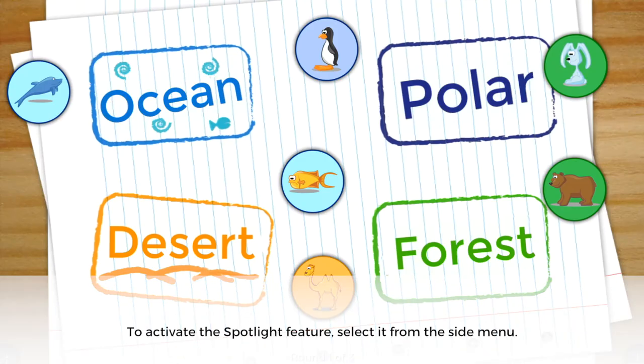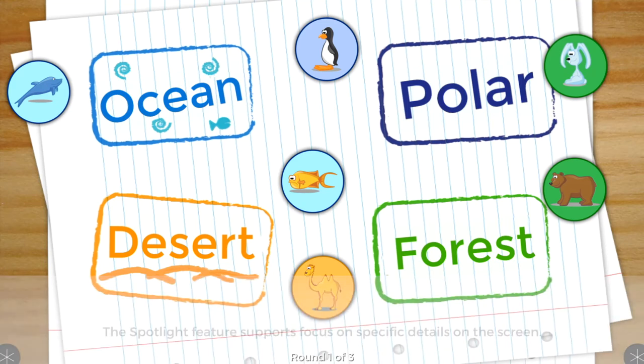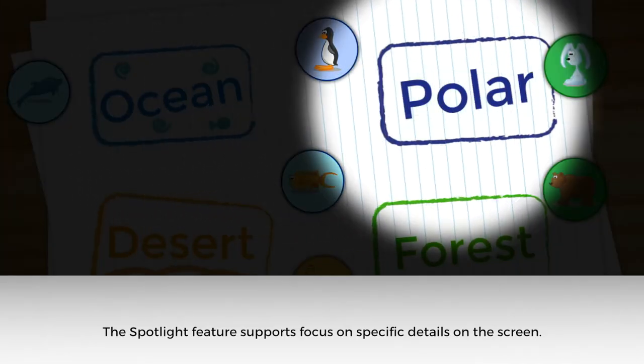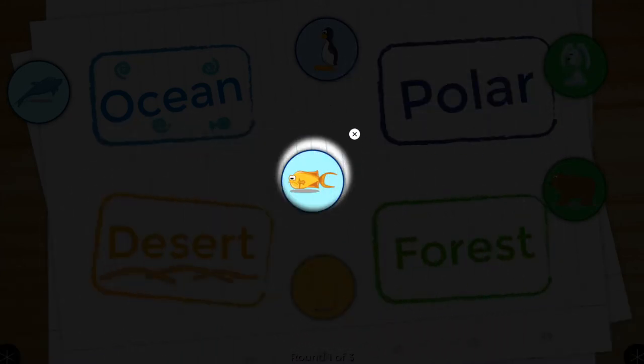To activate the Spotlight feature, select it from the side menu. The Spotlight feature supports focus on specific parts of the screen and works well when lessons and apps are in fullscreen mode as well as when they are in zones.